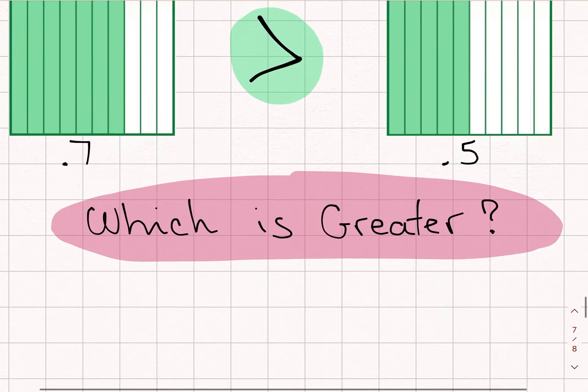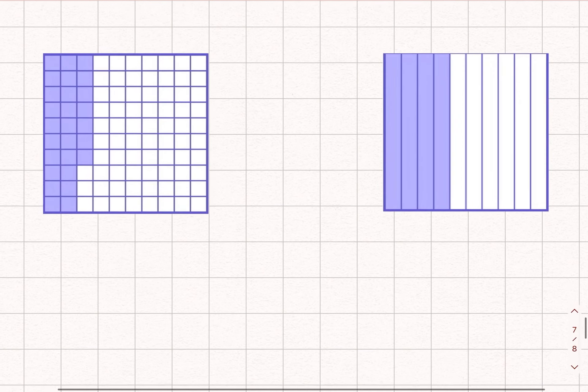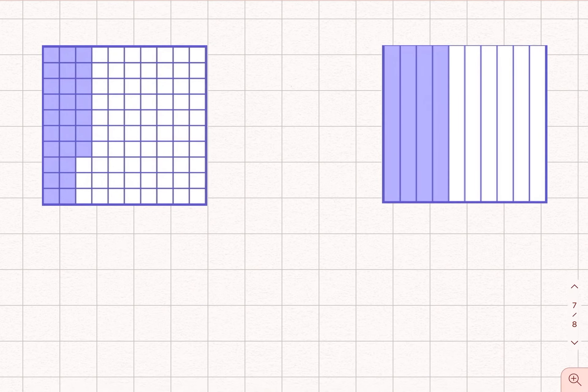Let's take a look at another example that might be a little bit trickier. In this example, one of our decimal numbers is divided up into hundredths and the other is divided up into tenths. So that will make things a little bit trickier.